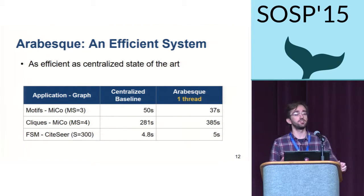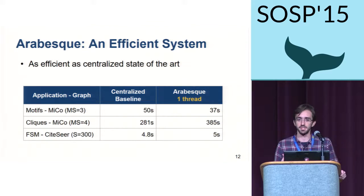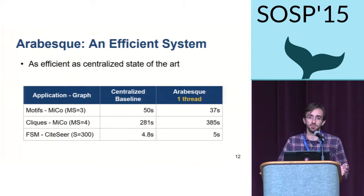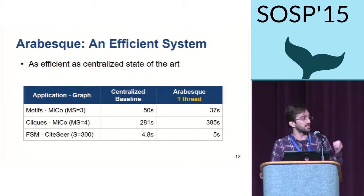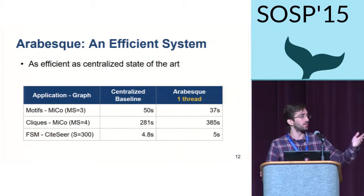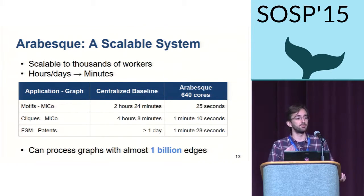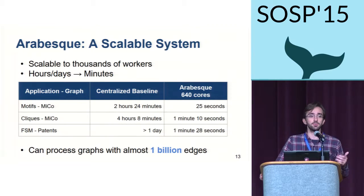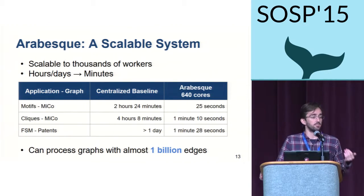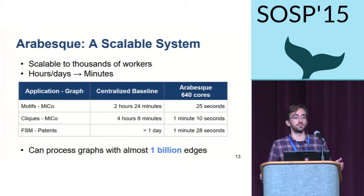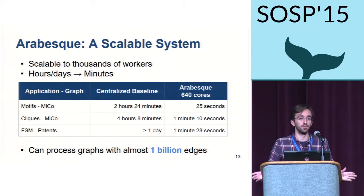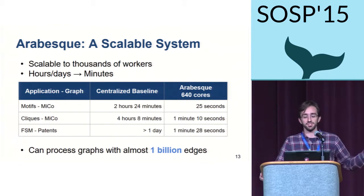Arabesque gives you the tools to easily implement your own graph mining algorithms without sacrificing performance. We've consistently seen that single-threaded executions of Arabesque have performance comparable to centralized state-of-the-art implementations. Because Arabesque is able to transparently scale executions to thousands of workers, we can take executions that would require several hours or even days and have them run in just a few minutes, allowing us to process big graphs far more efficiently.